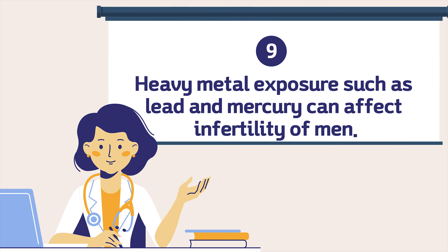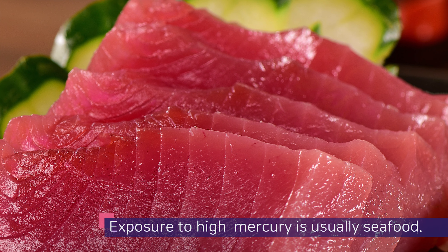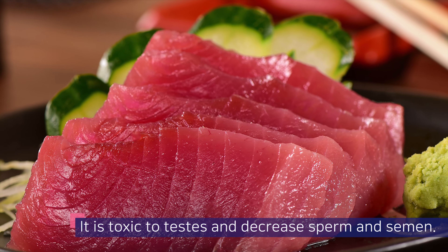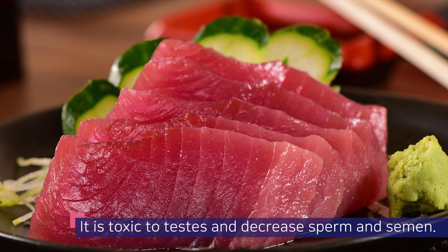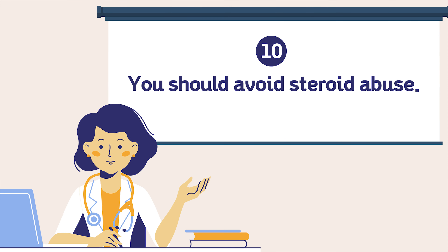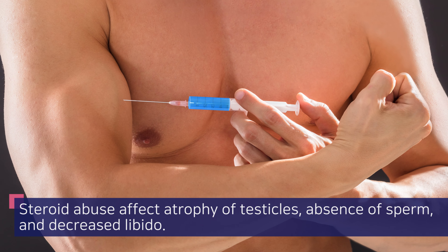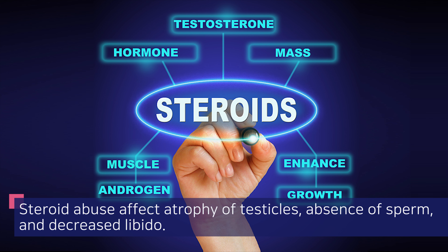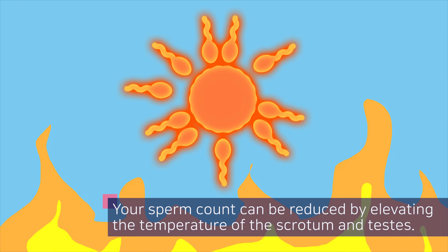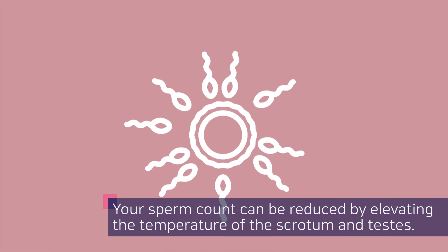Nine: heavy metal exposure such as lead and mercury can affect infertility in males. Exposure to high mercury is usually through seafood. It is toxic to the testes and decreases sperm and semen quality. Ten: you need to avoid steroid abuse. Steroid abuse causes atrophy of the testicles, absence of sperm, and decreased libido.